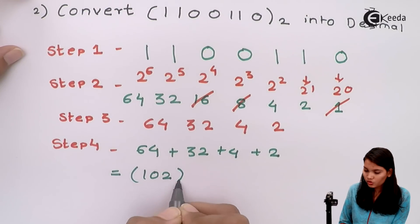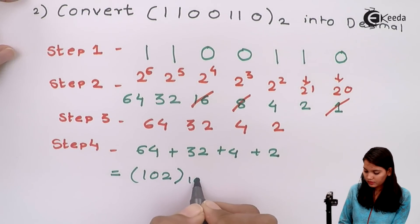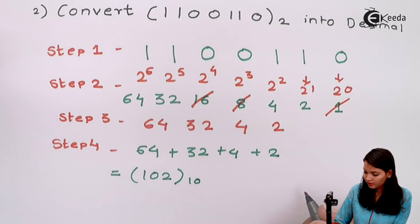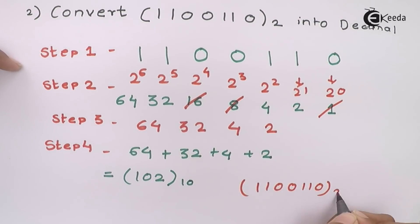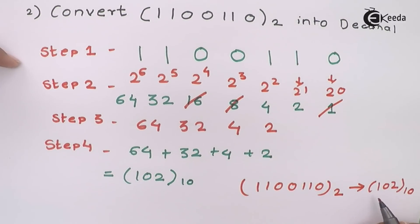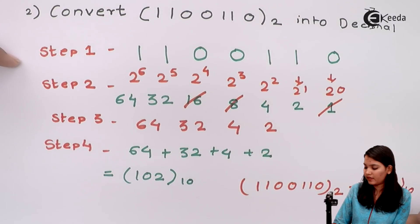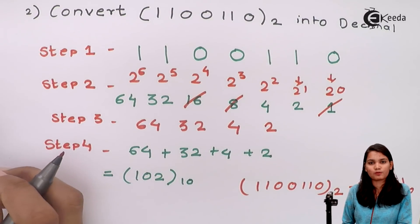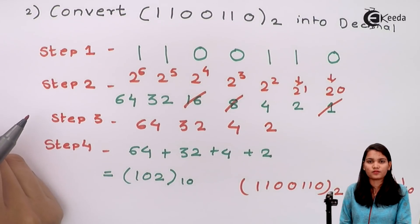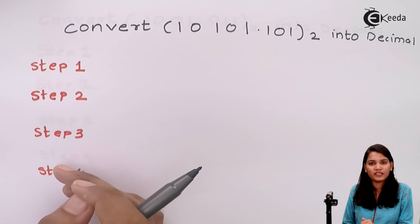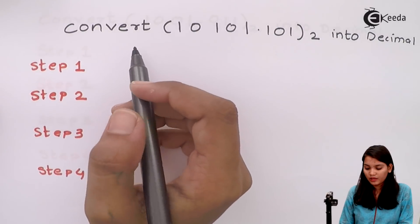This value 102 is in decimal. So when writing the answer, 1 1 0 0 1 1 0 in binary (base 2) gives 102 in decimal (base 10). Now we will see how to convert fractional binary numbers into decimal numbers.